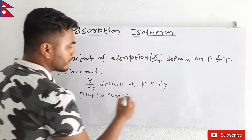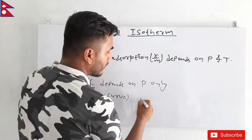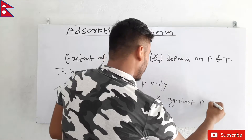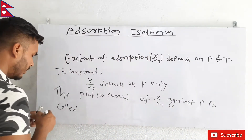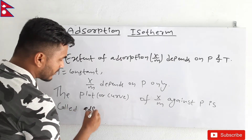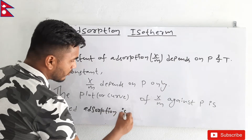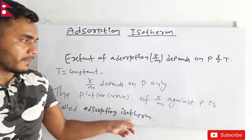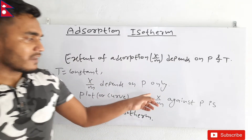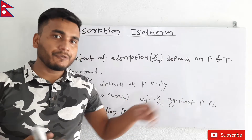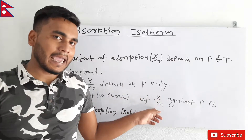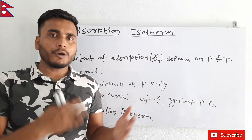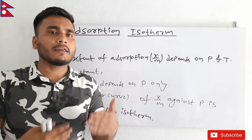If we vary pressure we get different values for x/m, and we can plot that. So the plot of extent of adsorption, that is x/m, against pressure is called adsorption isotherm. It is just the graph obtained by plotting x/m against pressure. As we now know what adsorption isotherm actually is, let's see a few important curves that show different adsorption isotherm phenomena.